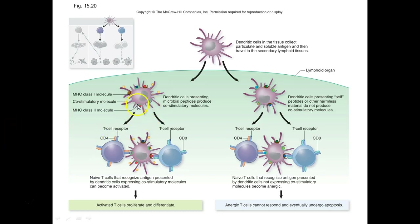Dendritic cells also have MHC class 2, presenting to CD4 — which is the other name for helper T cells. Naive T cells are what we call T cells when they're first born and have never seen antigen — just like kids who have no idea how bad the world is. When antigen is presented to them by a dendritic cell, this activates them.